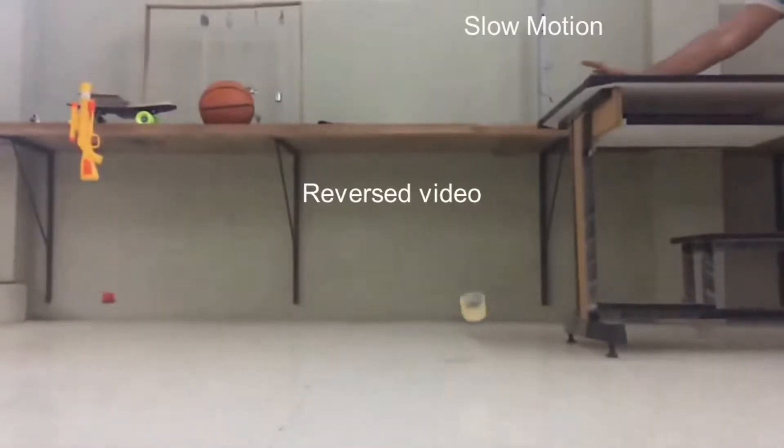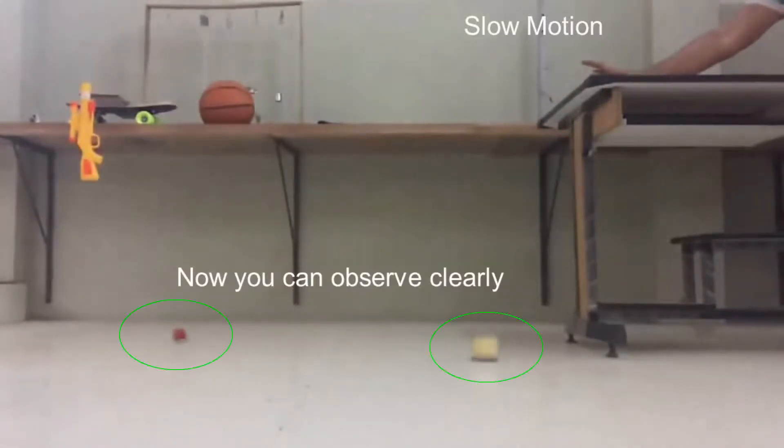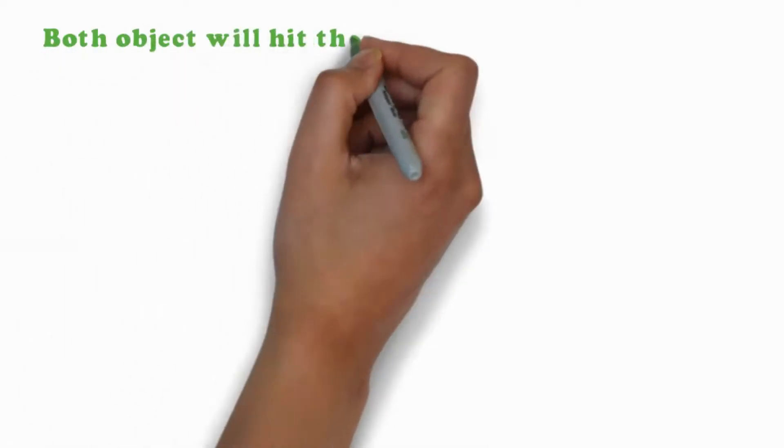I will show this experiment in slow motion. So from observation, both objects hit the ground simultaneously. Why did it happen?